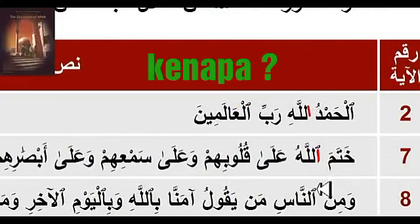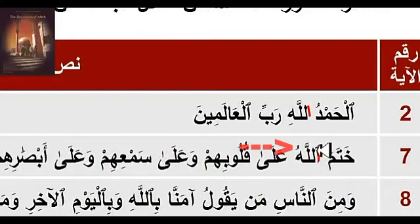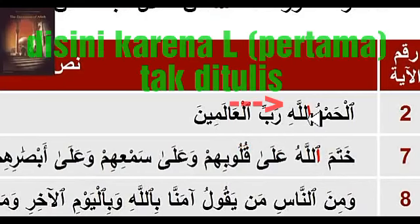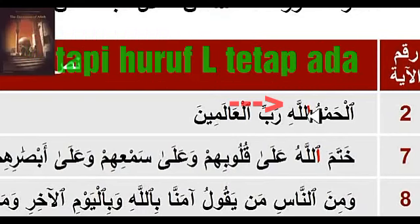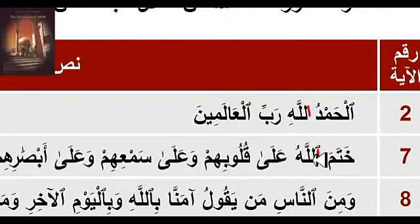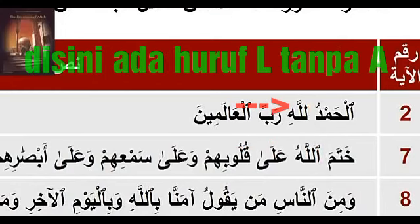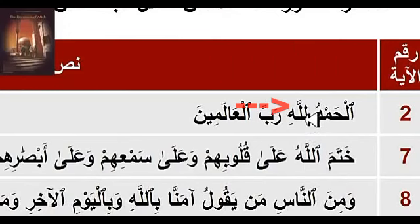So what happened? Simply, the first two letters are not part of the name. L means 'the.' The word here is not saying 'Al,' which is why the A disappears. But the letter L is still there because it says 'Lillah,' which means 'to Allah.' So here the A and L are coming as 'Lillah' — the letter L without the Alif. The Alif disappears. We call it Alif. It disappears simply because it says Lillah, which means 'to Allah.'